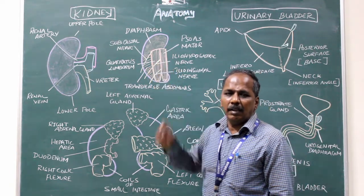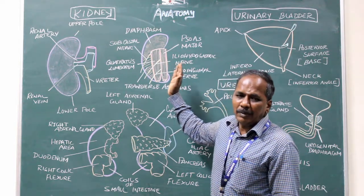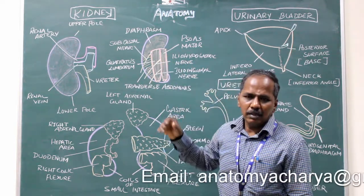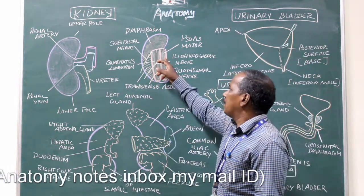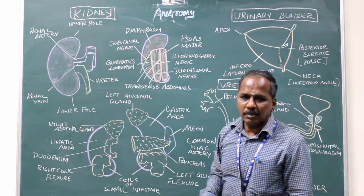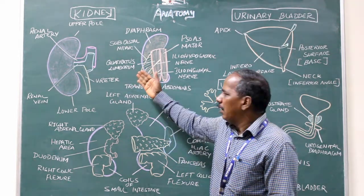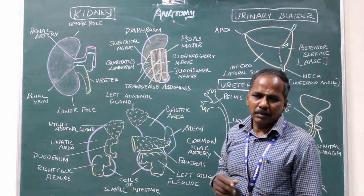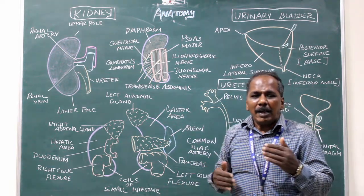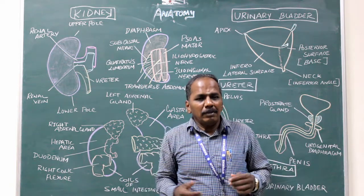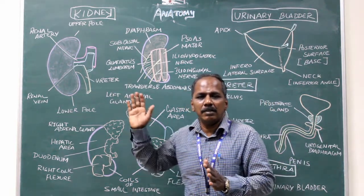Posterior relations of right and left kidney. Both have the same relations. In the upper half it is related to the diaphragm. In the lower half, from medial to lateral, it is related to psoas major, quadratus lumborum, and transverse abdominis. Three nerves run on the posterior surface: number one, subcostal nerve; number two, iliohypogastric nerve; number three, ilioinguinal nerve. The relations are the same for both kidneys except one: the right kidney is related to the twelfth rib, whereas the left kidney is related to the eleventh and twelfth ribs on its posterior surface.